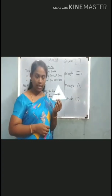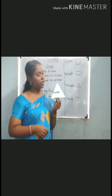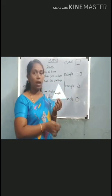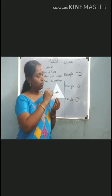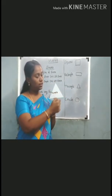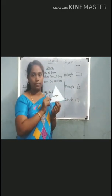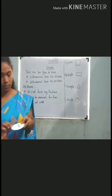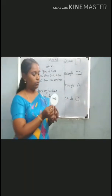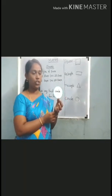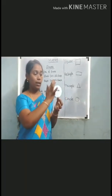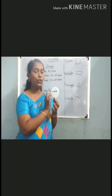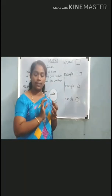This is a triangle. It has 3 corners and 3 sides. This is a circle shape. It has no corners and no sides.